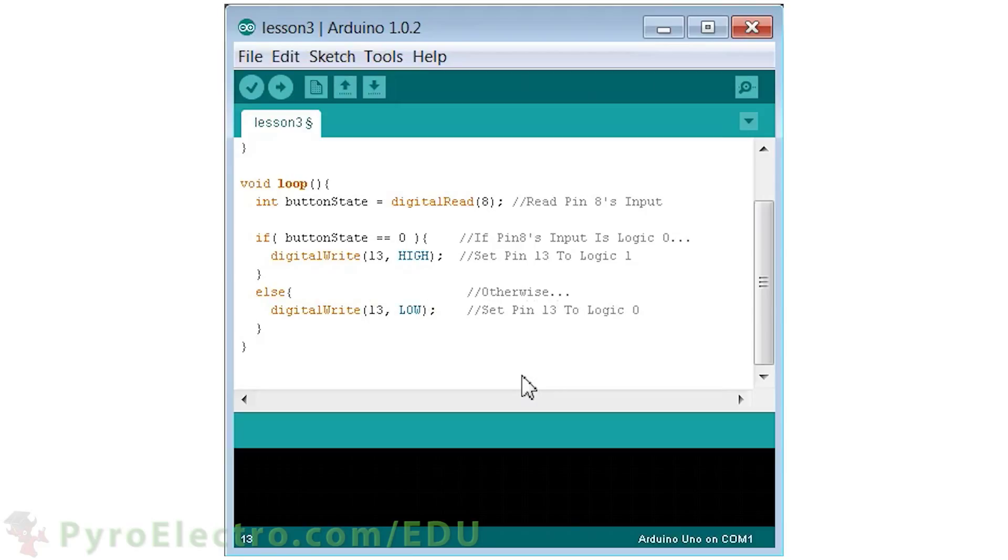Since pin 8 input has a plus 5 volt pull-up resistor, the input will always read a logic 1 until the push button is pressed. And when the push button is pressed, pin 8 will be connected directly to ground, and so input will be read as logic 0.